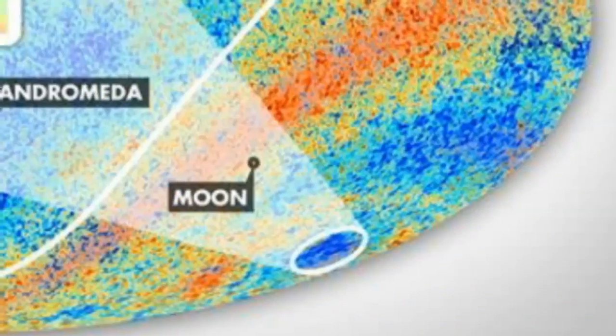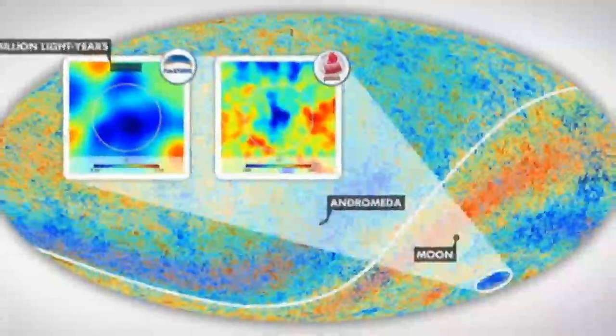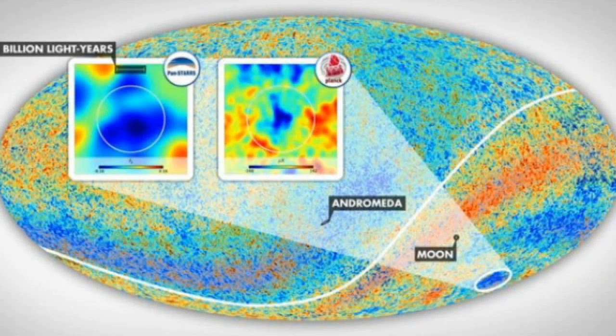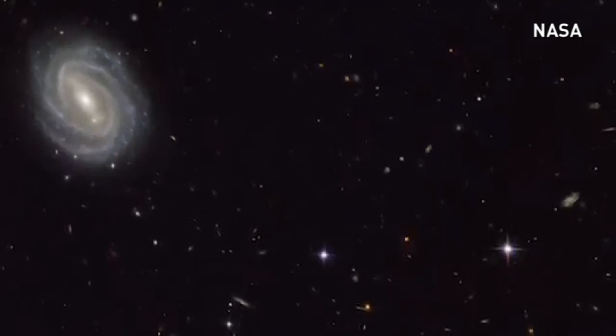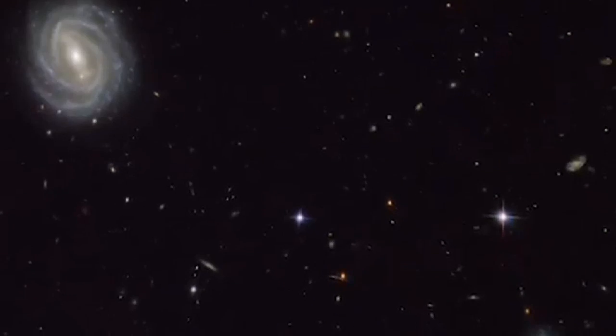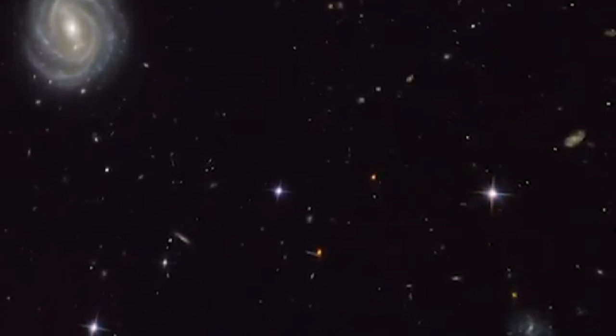It is a spherical shape, 1.8 billion light years across, that is distinguished by its unusual emptiness. The huge region contains about 20% less matter than other regions of the universe, and around 10,000 fewer galaxies.